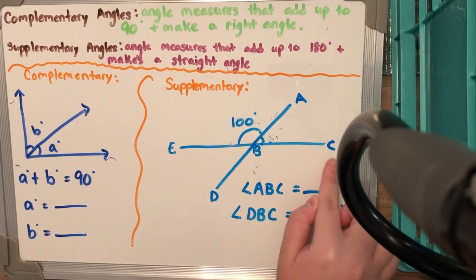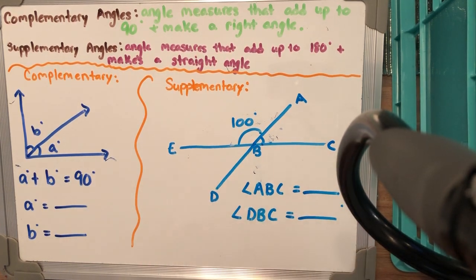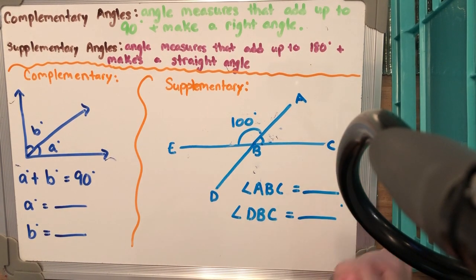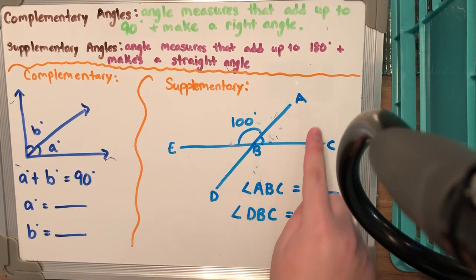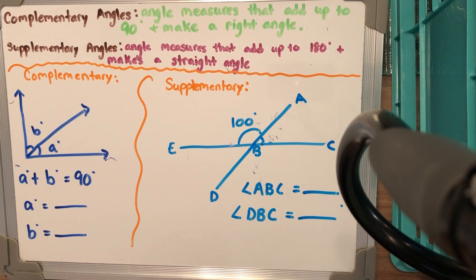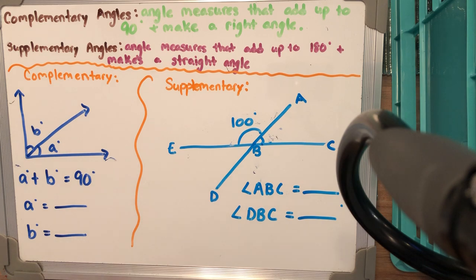For supplementary, angle EBC is our straight angle, so we know it's going to add up to 180 degrees. We are given an angle, so our job is to figure out what angle ABC is worth and what angle DBC is worth — when we add them all together it should give us 180 degrees. We would subtract, for example, 100 from 180 to figure out exactly what's going on.